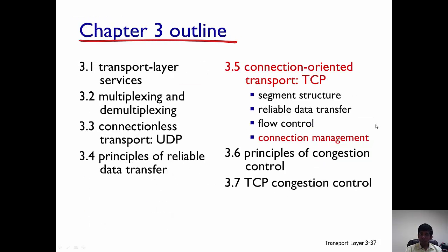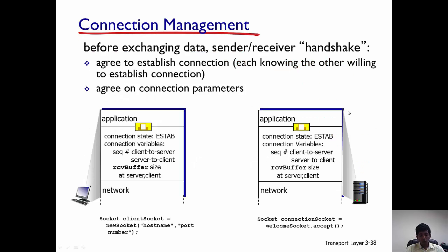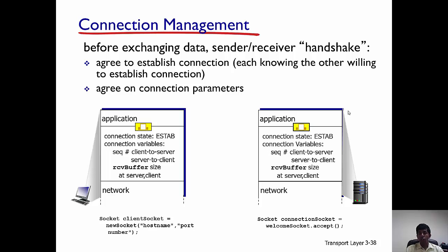Having briefly talked about flow control, we'll now talk about connection management. TCP is a connection-oriented protocol, so before sending data a connection has to be established between the sender and the receiver. There has to be a handshake where the sender and receiver acknowledge each other and agree on the connection parameters.